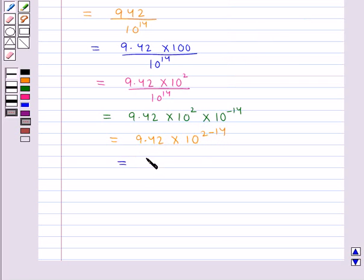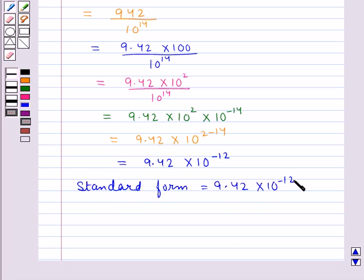This is equal to 9.42 multiplied by 10 to the power minus 12. So we get standard form is equal to 9.42 multiplied by 10 to the power minus 12. Hence our final answer is 9.42 multiplied by 10 to the power minus 12.